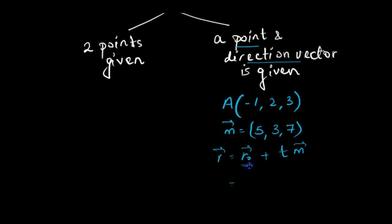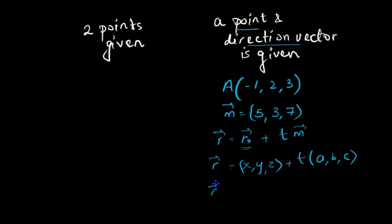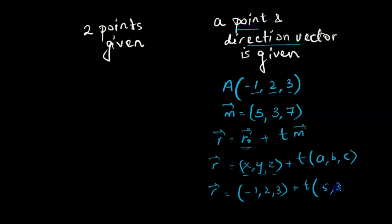The only difference is that instead of just x, y, we would have x, y, z, and here also instead of just A, B we would have A, B, C. So R would be equal to x, y, z — that comes from the point, which gives us negative 1, 2, 3 — and A, B, C is 5, 3, 7. And that's how we write the vector equation.